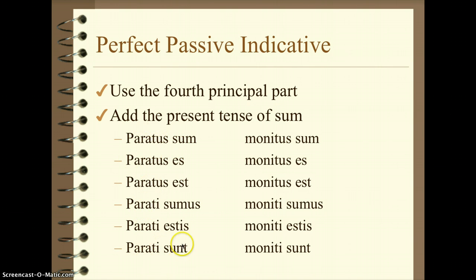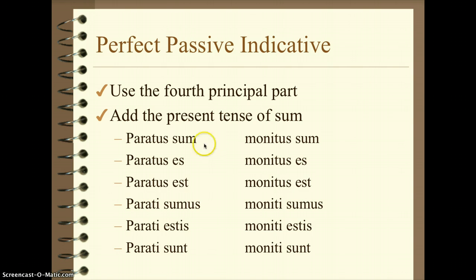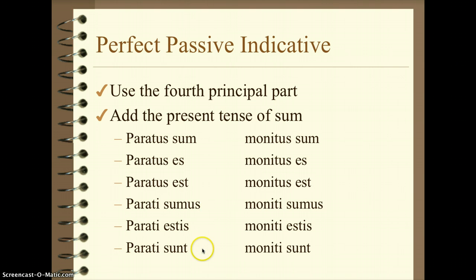Start with the fourth principal part and then add the present tense of sum. If we just look at the second word: sum, es, est, sumus, estis, sunt. This doesn't change from verb to verb — it doesn't matter what kind of verb you have, you're going to use the present form of sum. Use them as separate words entirely; do not try to attach them. Paratus sum is your form, paratus es, paratus est. This is the perfect tense, so we do need to translate it with have or has, but it's also passive, so we need a form of to be in English as well.